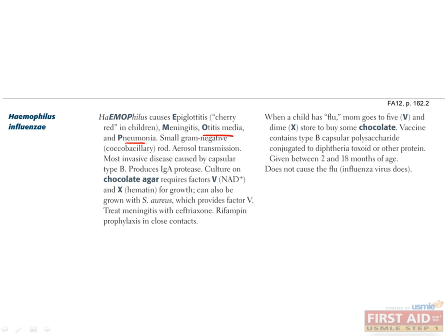Suspect HIB infections in children who are immunocompromised, non-vaccinated, immigrants, or asplenic. Due to increasing resistance against ampicillin and amoxicillin, treat respiratory H. influenzae infections with azithromycin and meningitis with the CNS-penetrant cephalosporin ceftriaxone. Rifampin should be used by close contacts for prophylaxis.